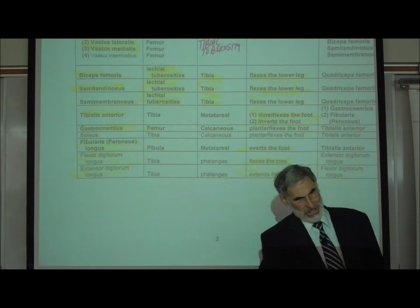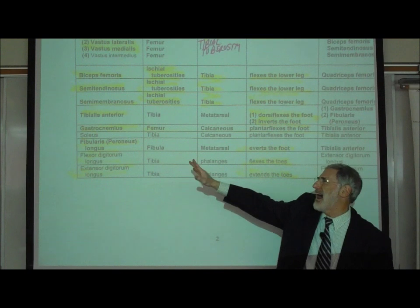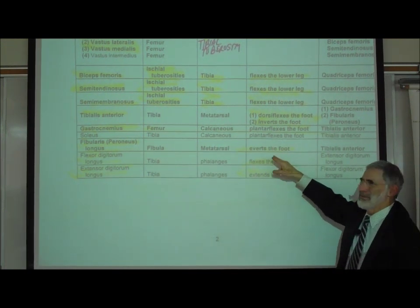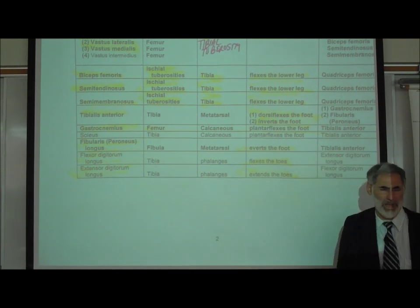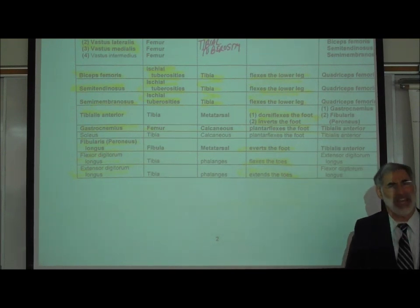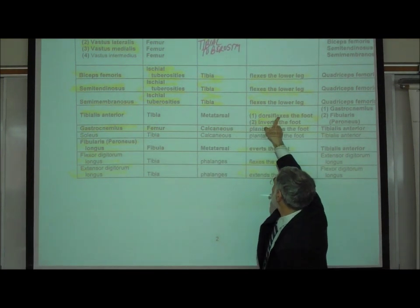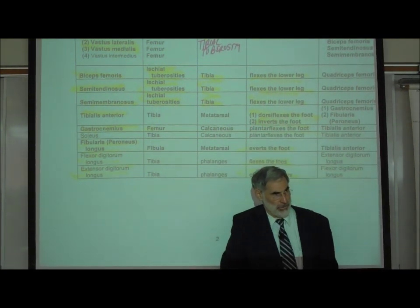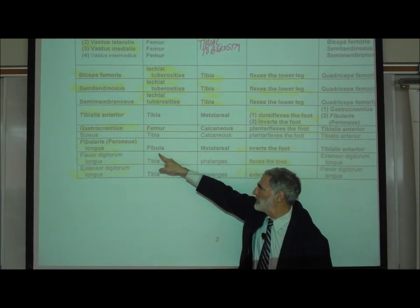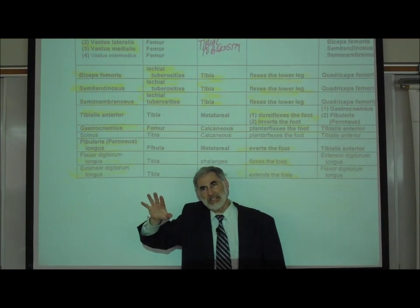It everts the foot. And I did make that in bold print. And we're all kind of thinking, why? I mean, I can barely evert or turn my foot outwards at all, and it's not a big muscle. So why make it bold print? Because it's the antagonist of the tibialis anterior. You'd say, well, that's nice. Who cares? The tibialis anterior, we said, not only dorsiflexes, but inverts the foot. I'm going to explain what happens if this fibularis isn't as strong as it should be.